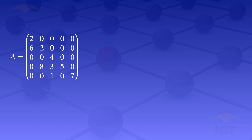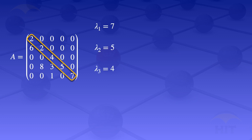So the elements on the diagonal will be the eigenvalues. In this case, we are looking at those elements: the 2, the 2, the 4, the 5, and the 7. Since this is a lower triangular matrix, those highlighted elements are the eigenvalues. So we have lambda 1 equal to 7, lambda 2 equal to 5, lambda 3 equal to 4, and lambda 4 equal to 2.